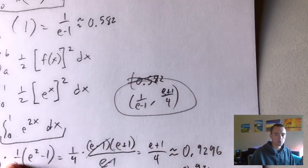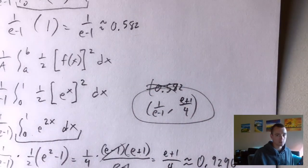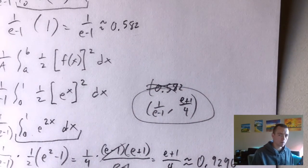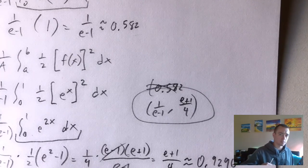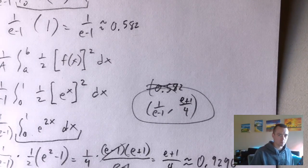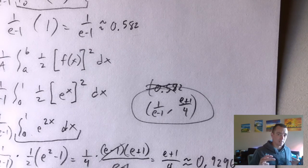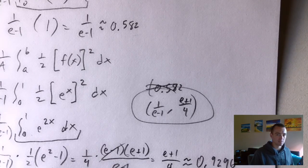So the exact coordinates of our centroid are 1 over (e minus 1) for the x-coordinate and (e plus 1) over 4 for the y-coordinate, or approximately (0.582, 0.93). I hope you found this video helpful — hit the subscribe button below and together we'll get you great grades in Calc 2. Thanks and see you next time.